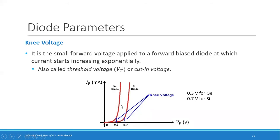The knee voltage is also called threshold voltage Vt or cutting voltage, though there is a small difference between them. The cutting voltage is what you get if you extend the characteristic as a straight line to the voltage axis. They are almost the same, so we can use these terms interchangeably.